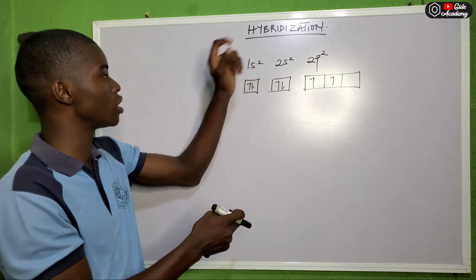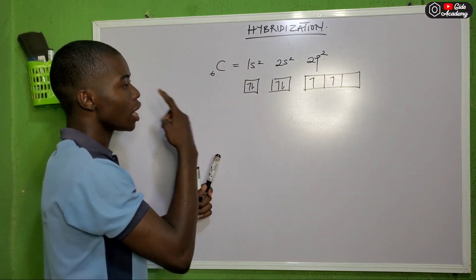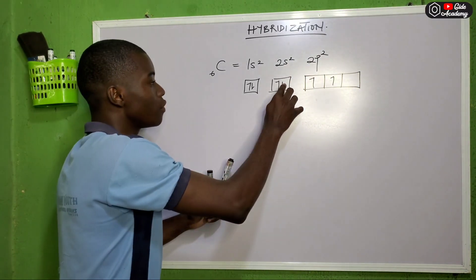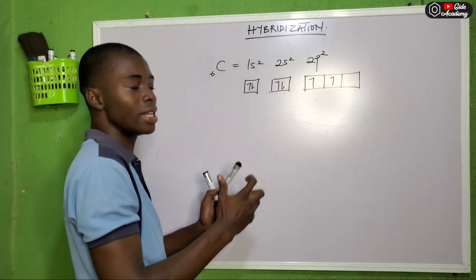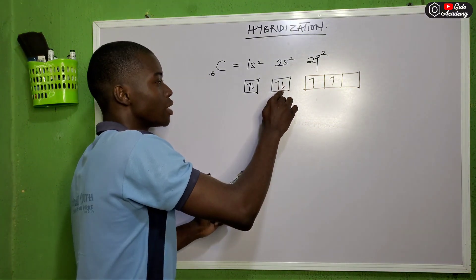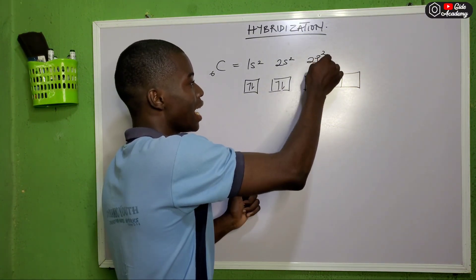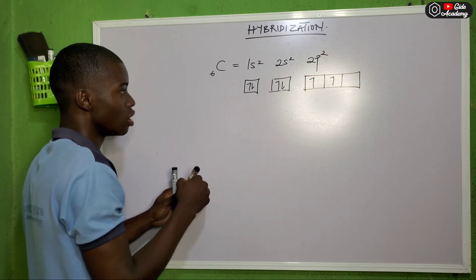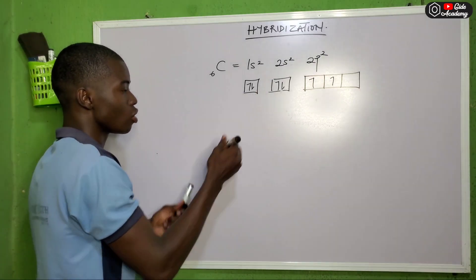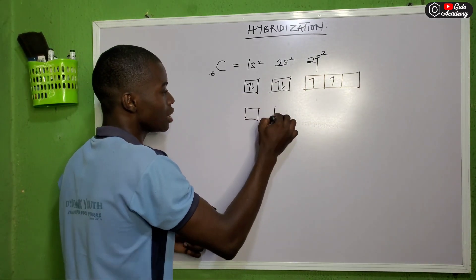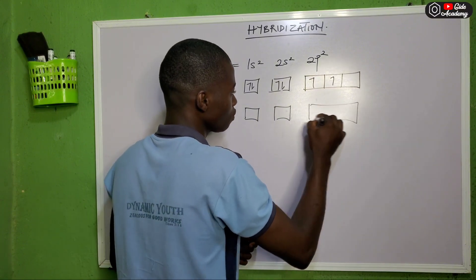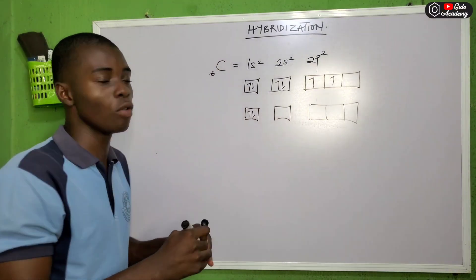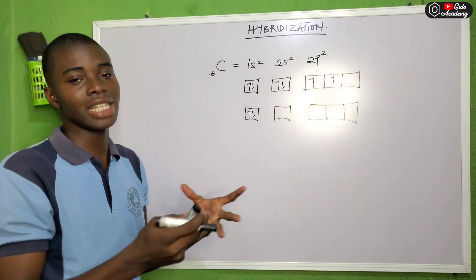Before hybridization can take place, the energy levels must be similar — they must be equal. If one electron from the 2s orbital gains enough energy and moves to a higher energy level, you get the excited state of carbon.